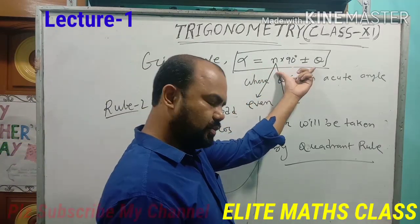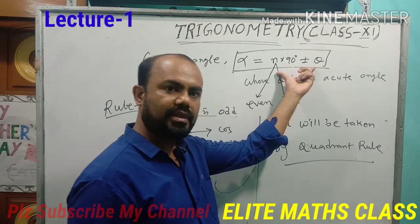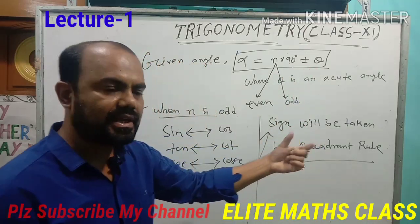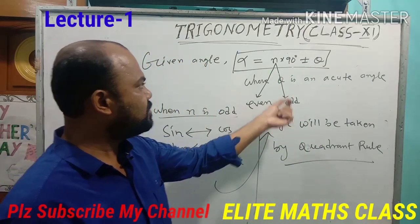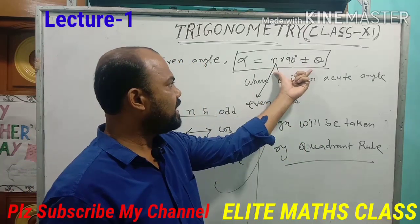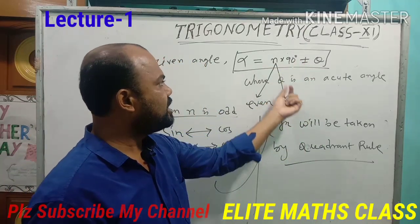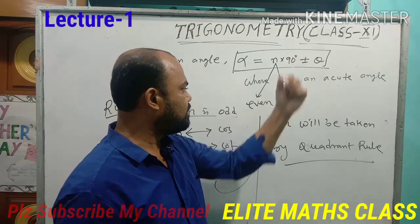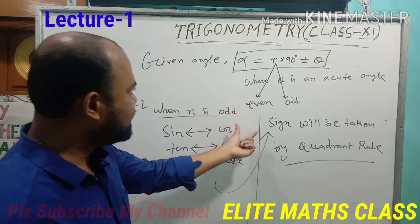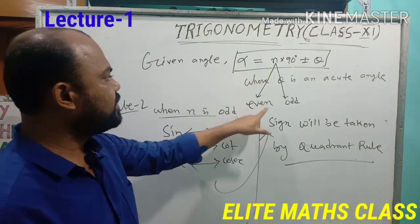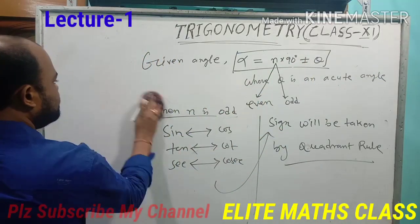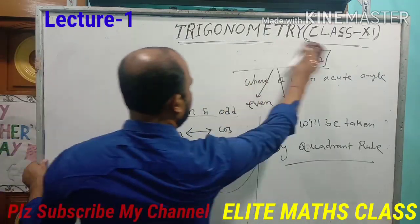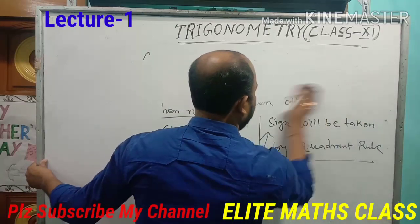So the rule is clear. Whenever we are finding the value of a large angle, the first thing you have to do is divide the angle by 90, then express it in the form N × 90° ± θ, then check whether N is even or odd. Now, just simply see an example.